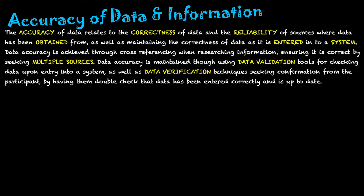Data accuracy is achieved through cross-referencing when researching information, ensuring it is correct by seeking multiple sources. We check multiple sources of information, and if both sources say the same thing — as well as aligning with our own education — we can assume that the data we're getting is correct.